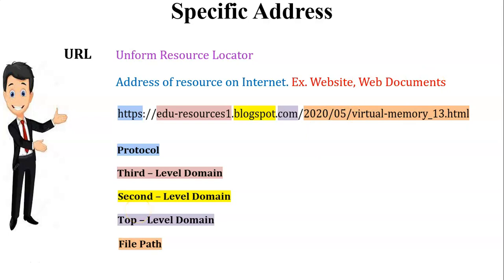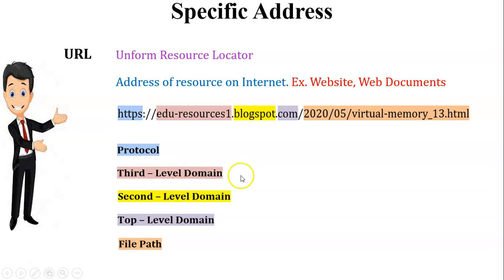So we can say a URL is made up of five different parts: protocol, third level domain, second level domain, top level domain, and file path. Sometimes the third level domain is optional, but the second level domain and top level domain are present in each and every URL.